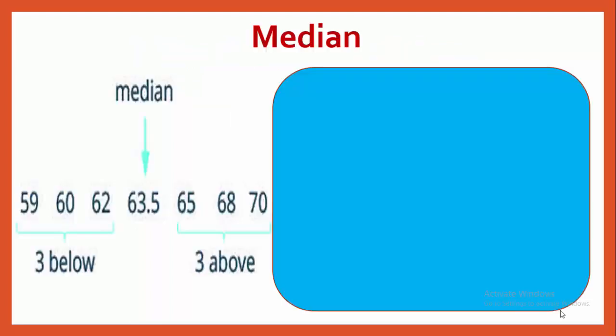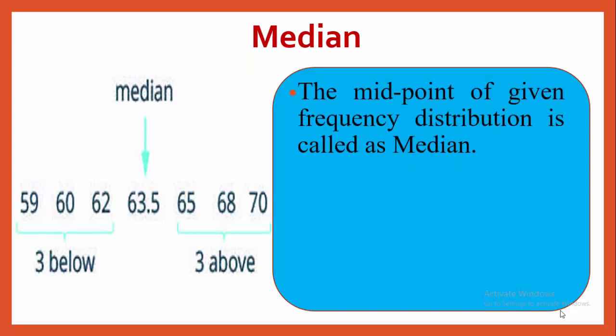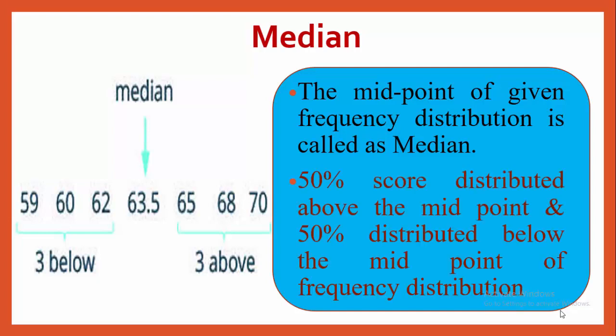The next measure of central tendency is median. The midpoint of a given frequency distribution is called the median. 50% of scores are distributed above the midpoint and 50% are distributed below the midpoint of the frequency distribution.